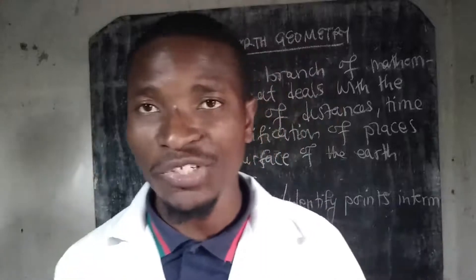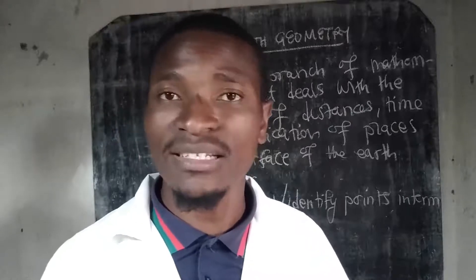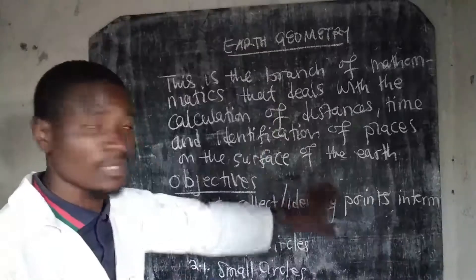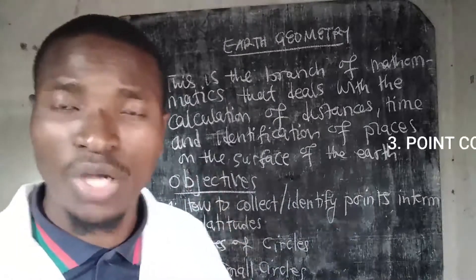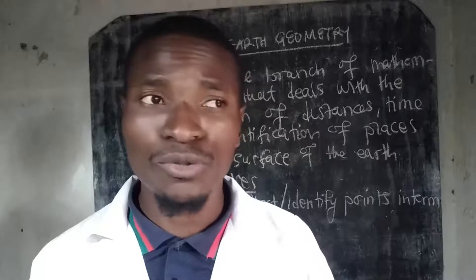I'll teach you everything about Earth Geometry, starting from how to locate points on the Earth's surface, how to calculate the distance between different towns or places on the imagined Earth surface, and how to calculate how long it will take a certain airplane to travel. Earth Geometry is the branch of mathematics that deals with time calculation and distance calculation between different points on the surface of the Earth.